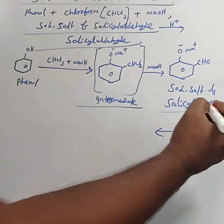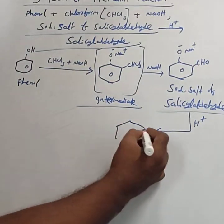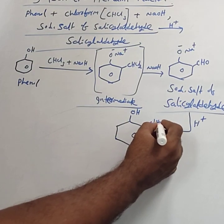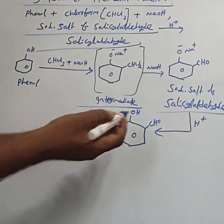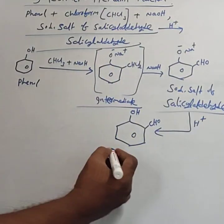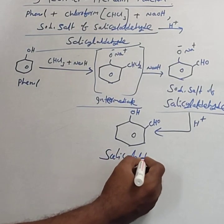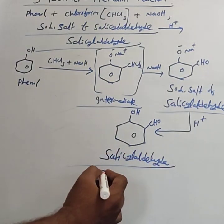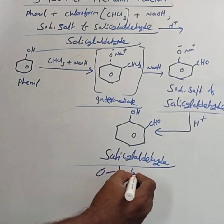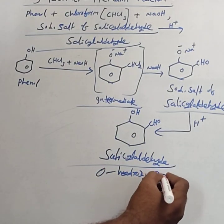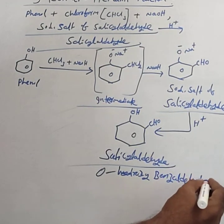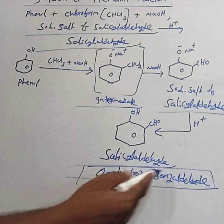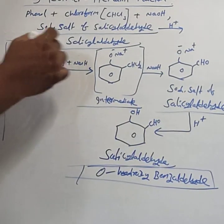The sodium salt of salicylaldehyde on acidification forms salicylaldehyde. The product has an OH group and a CHO group introduced at the ortho position — a CHO is introduced at the ortho position. The name of the product is salicylaldehyde, also called ortho-hydroxybenzaldehyde.